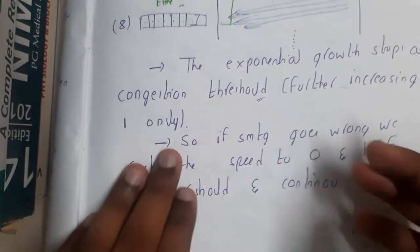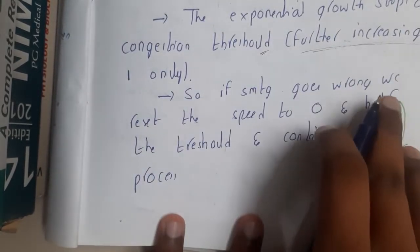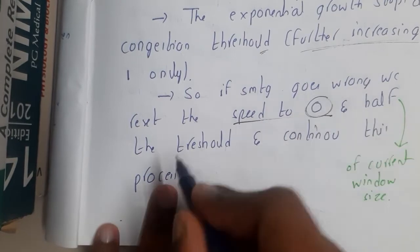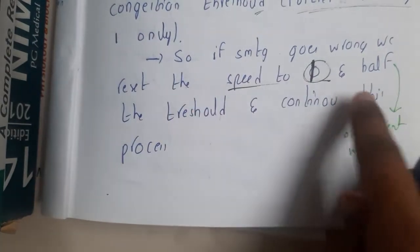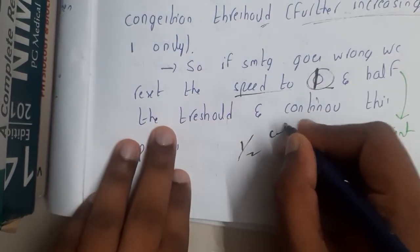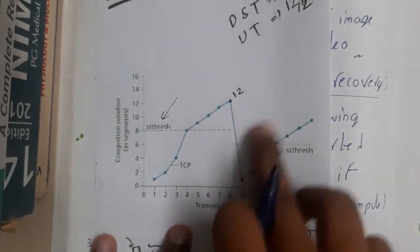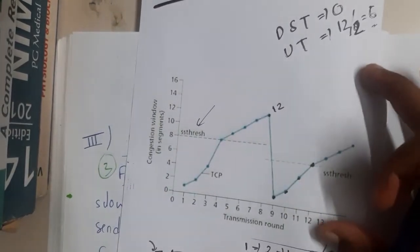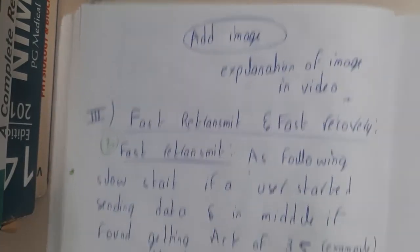Once you reach the threshold you increase by one only. At some point you will hit congestion. At that point you reduce your speed down to one — not zero — and reset your threshold to half of your current window size. Then you repeat the same process again. I hope everyone got a clear idea about slow start from this diagram.